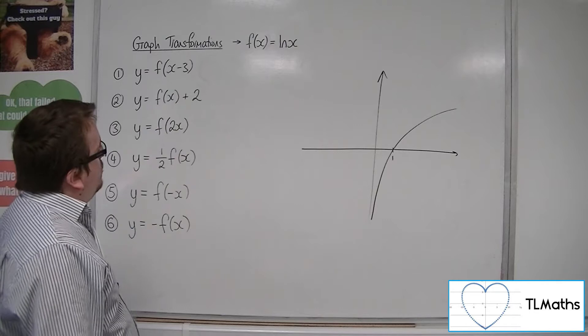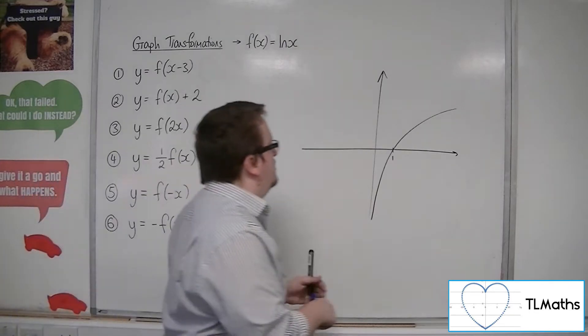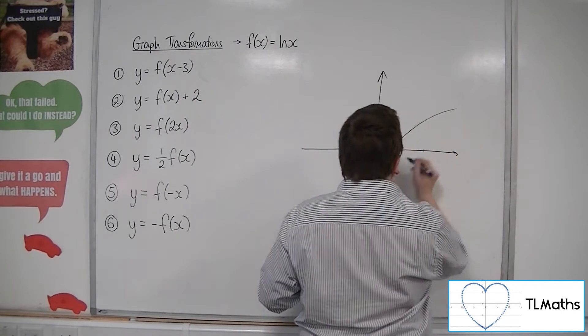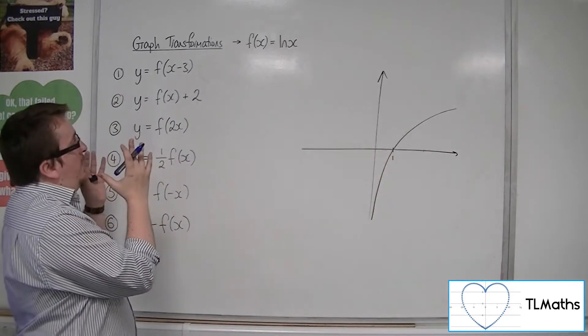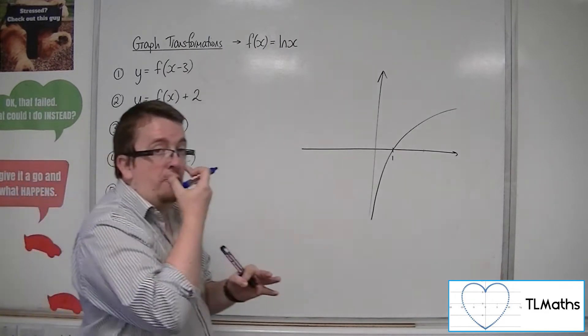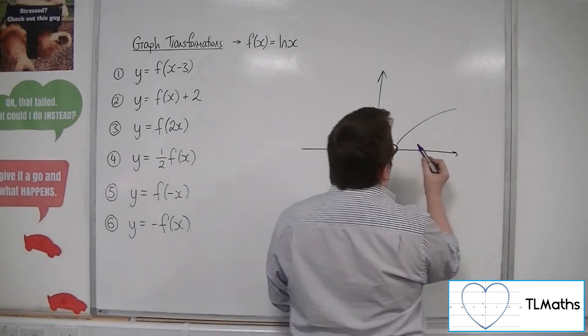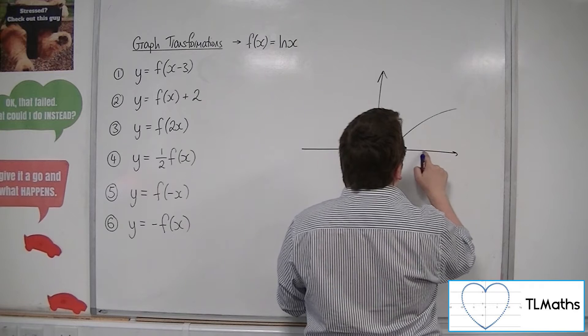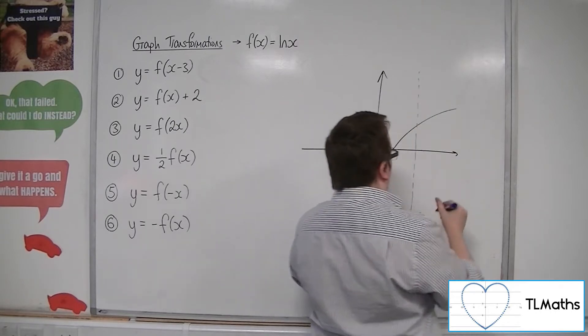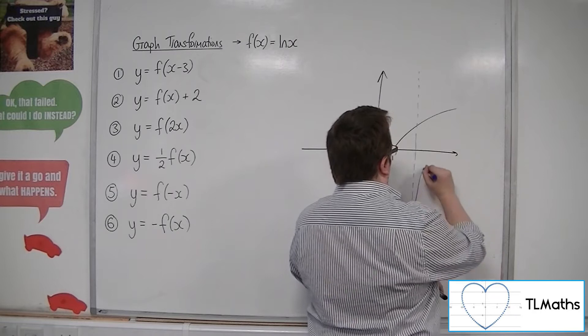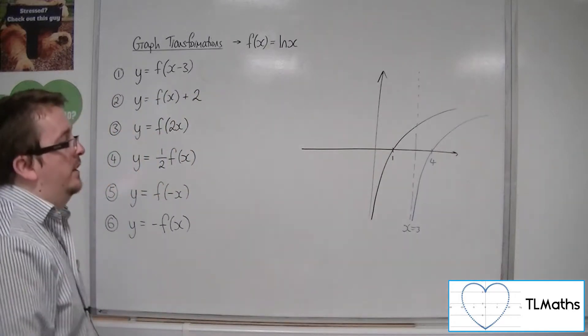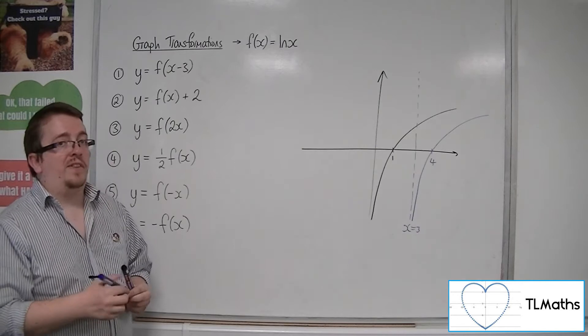So if I want to translate this by the vector (3,0), I want to shift it three steps to the right. It'll now be going through 4. Also because of that, if I moved the whole curve three steps to the right, then the asymptote will move with it. So it was at x = 0, it will now be at x = 3. So there's my new asymptote. So the curve will do something like this, going through 4 on the x-axis. So the whole curve shifts three steps to the right, so does the asymptote.